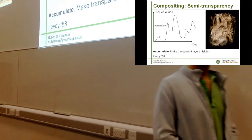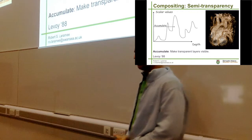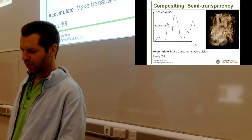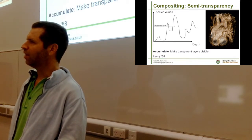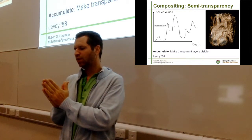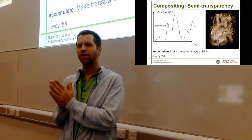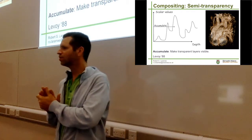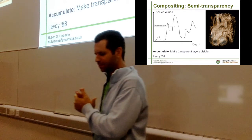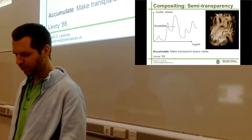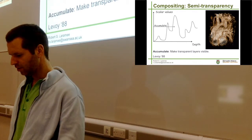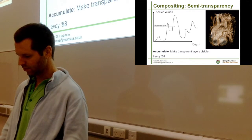Here's a compositing example - it's similar to the x-ray example. Compositing and accumulate have this special property that you get an average view - a view that doesn't just target one object. It doesn't just give you the skin or the bones; it returns multiple objects. We can make transparent layers visible. It looks like a heart - some sort of a heart.